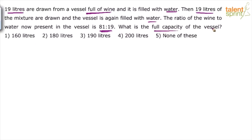This question looks different, but if you have understood model 2 or model 3 of our video on allegations and mixtures where we talked about removal and replacement — this is basically a case where you remove something from a mixture and replace it with something else. You remove the same quantity and replace with the same quantity of the other item. So this is like a continuous process done n times, and finally you obtain some ratio.